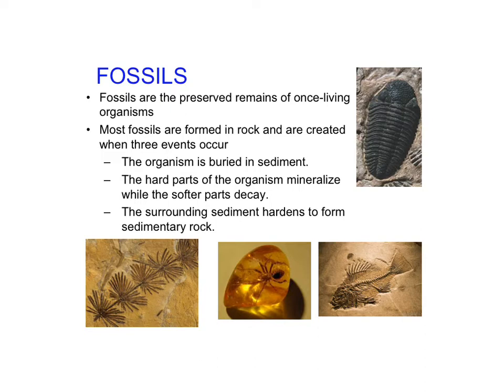Most fossils form in rock. The way they are created is that the organism is first buried in sediment — sand, mud, something like that. The hard parts of the organism mineralize; they become minerals, they become rock basically. The softer parts decay and go away. Then the surrounding sediment hardens and forms rock. That would be the case with this trilobite.